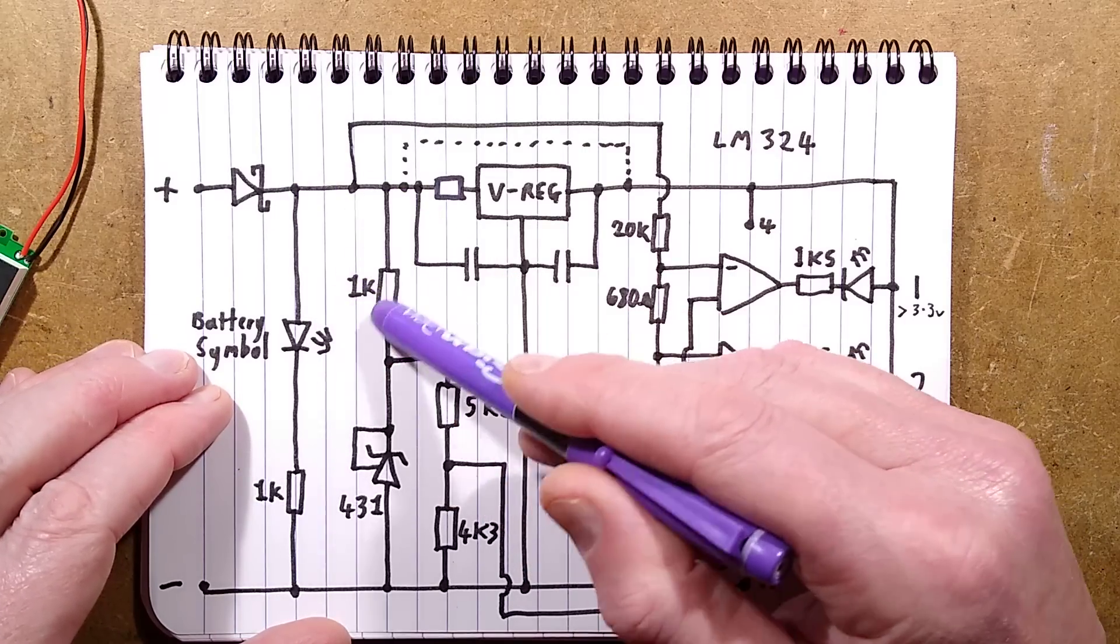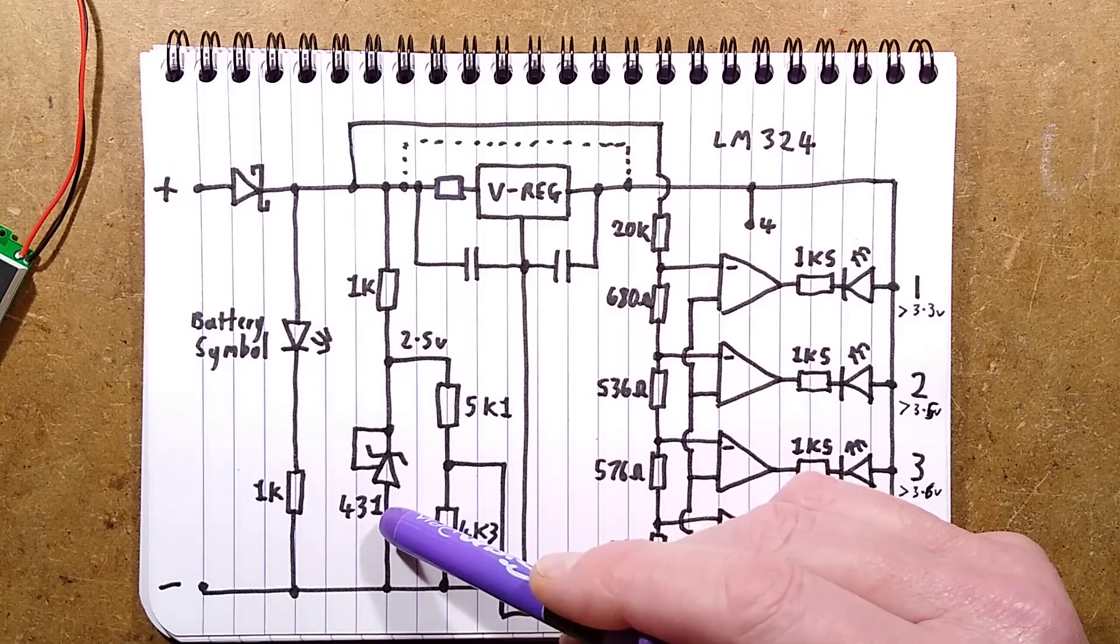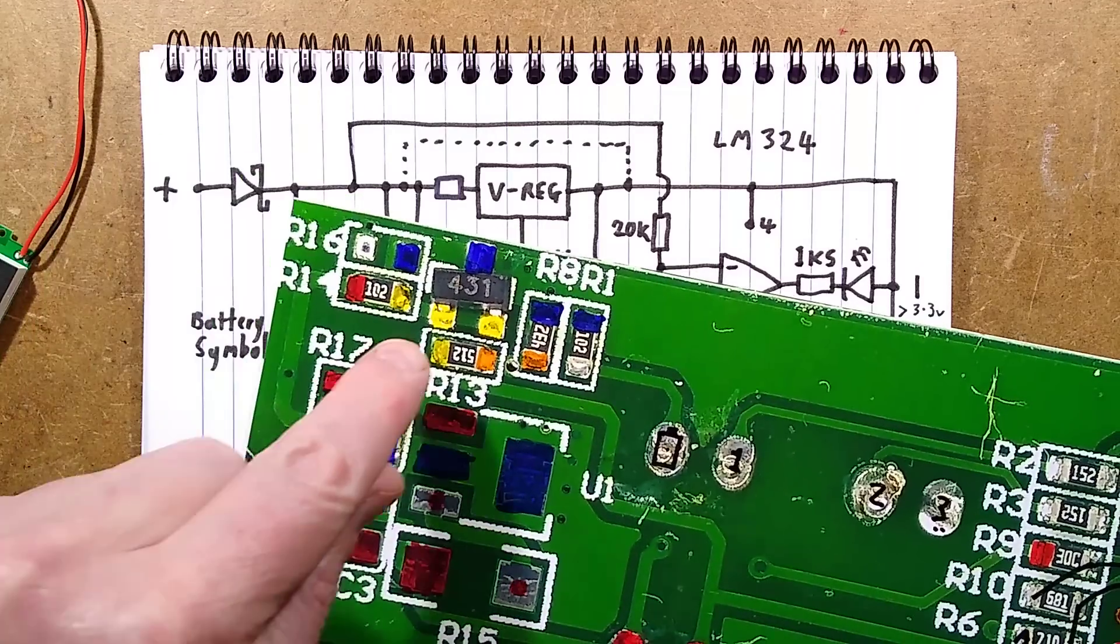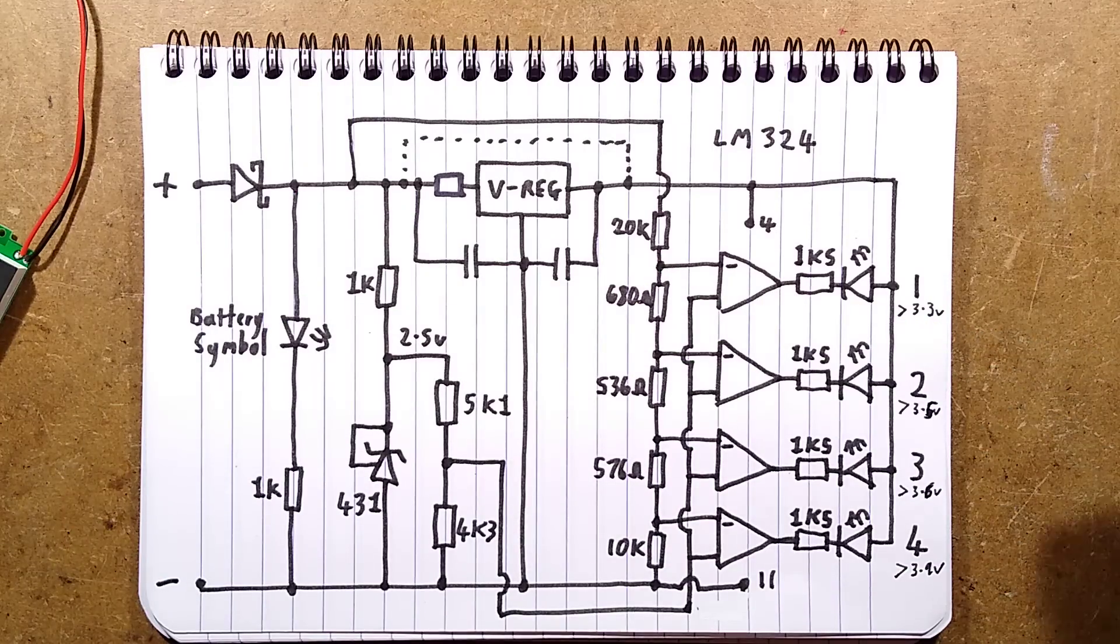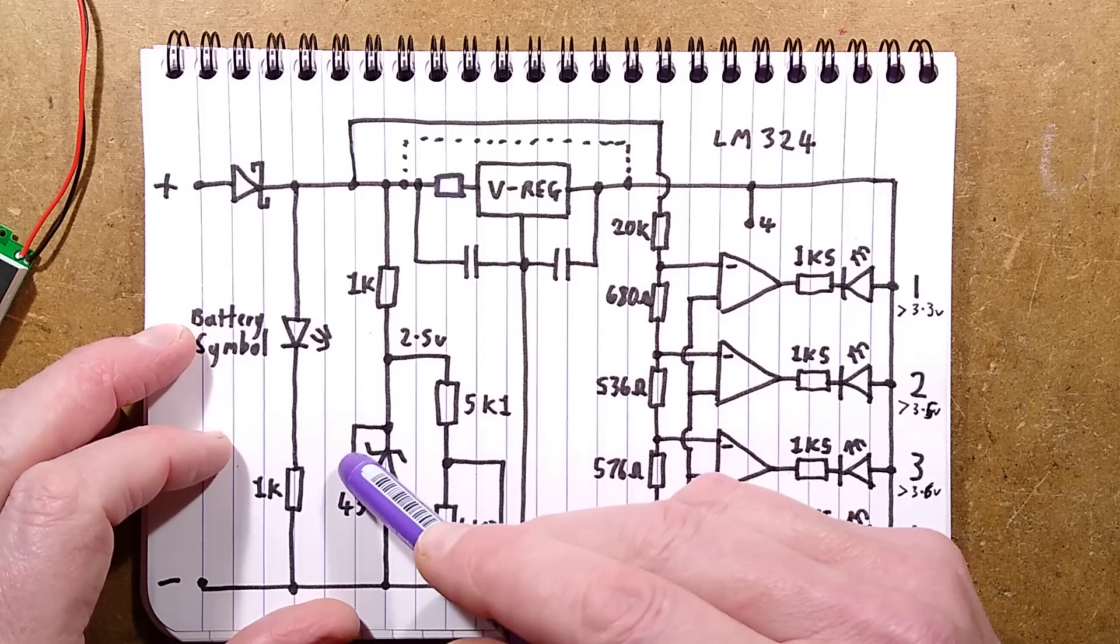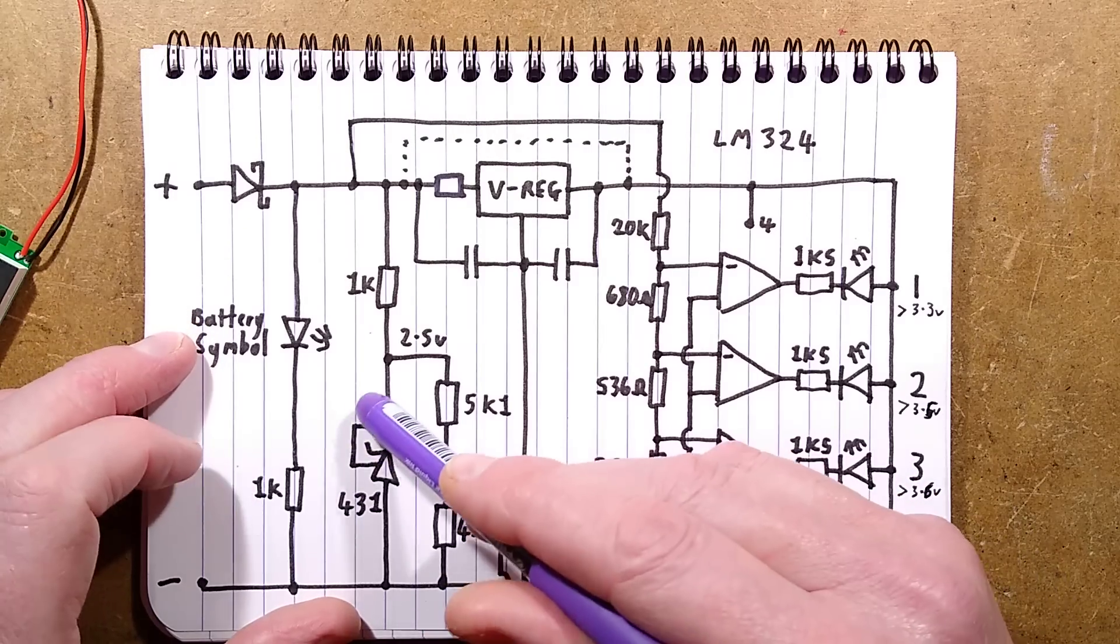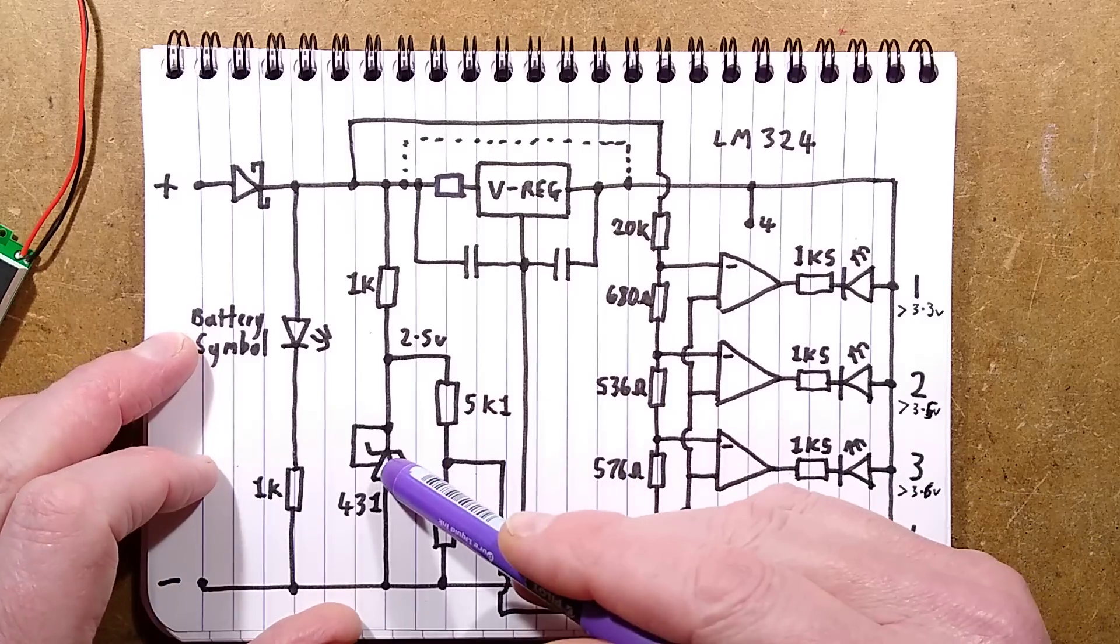Then we've got a current limiting resistor and a 431. The 431 is a classic component, it's that little component right up there. TL431, it's cloned to death. It's a 2.5 volt voltage reference, but because it's got this reference pin here you can actually use a potential divider and you can set it to any voltage.